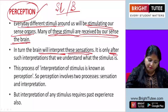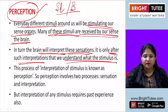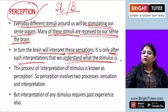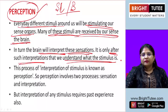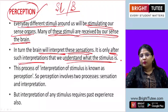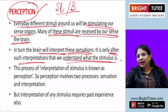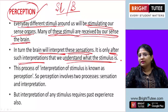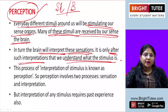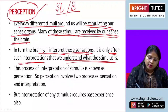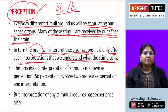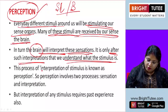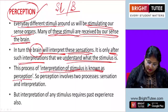In turn, the brain will interpret these sensations. It is only after such interpretations that we understand what the stimulus is. Until and unless your brain is working, you will not be able to understand what you are seeing. If your brain doesn't have information on a sound, you will not be able to understand what that sound is. If a stranger talks to you, you are not able to recognize that stranger's voice because your brain has never heard it. Here in perception, the brain plays a very important role.